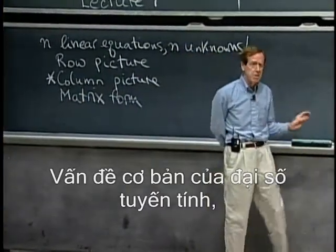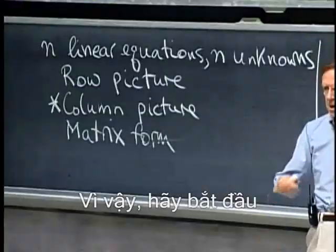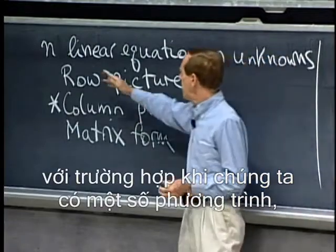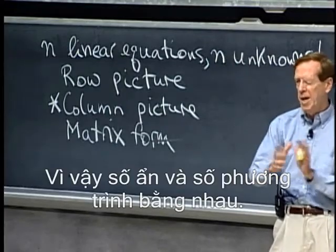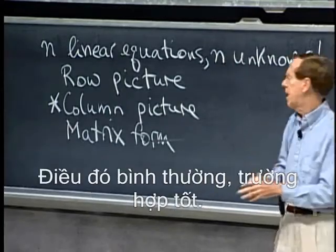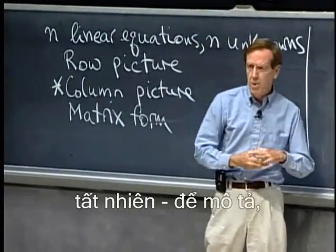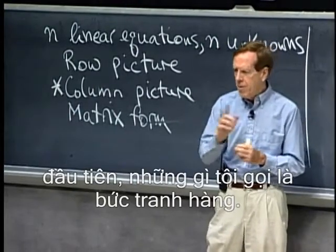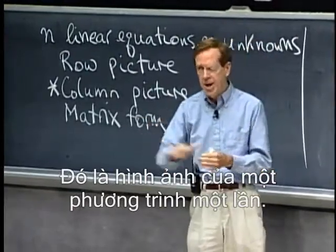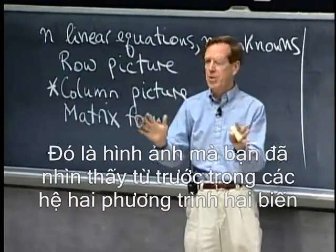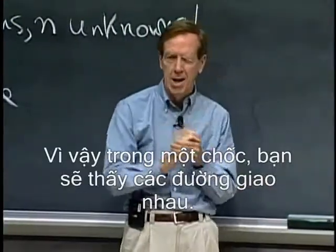The fundamental problem of linear algebra, which is to solve a system of linear equations. So let's start with the case when we have some number of equations, say n equations and n unknowns. So an equal number of equations and unknowns. That's the normal nice case. And what I want to do is, with examples of course, to describe first what I call the row picture. That's the picture of one equation at a time. It's the picture you've seen before in two by two equations where lines meet, so in a minute you'll see lines meeting.